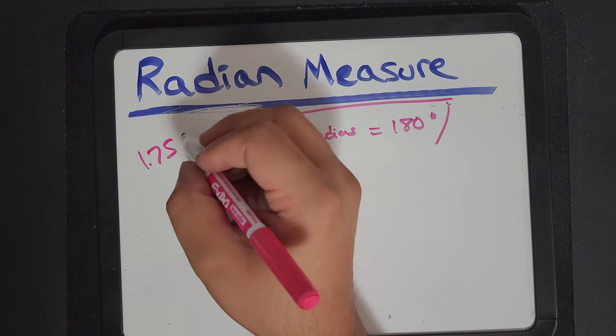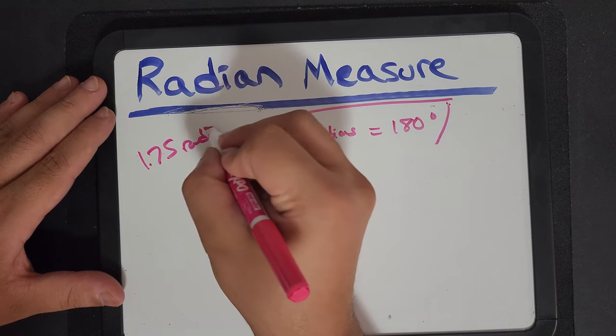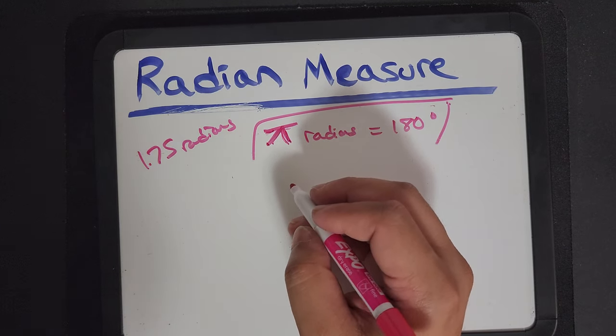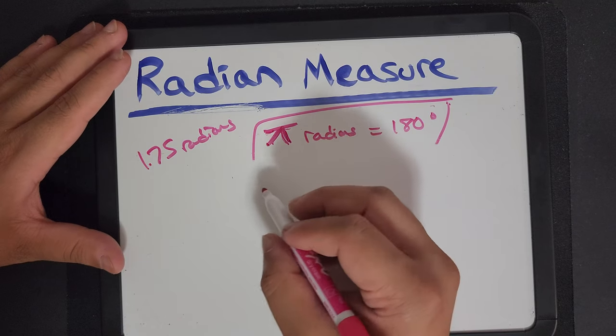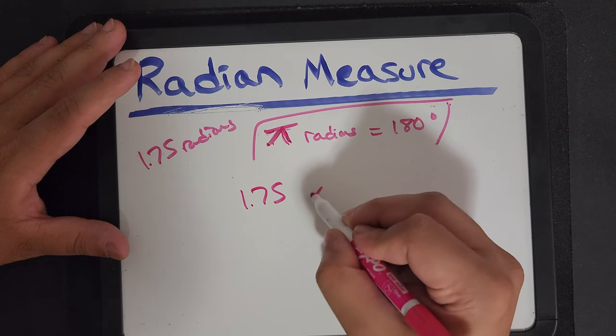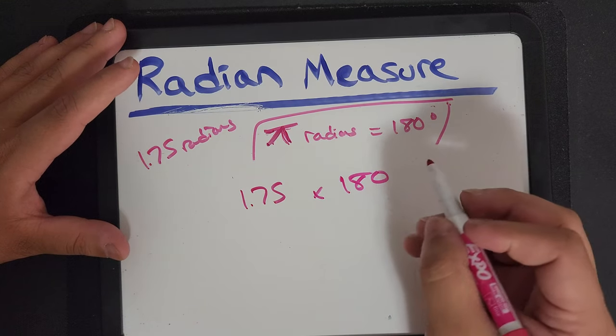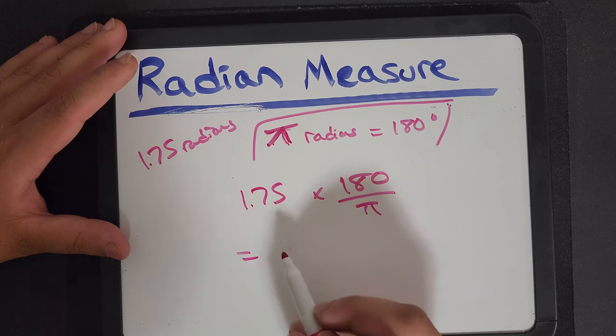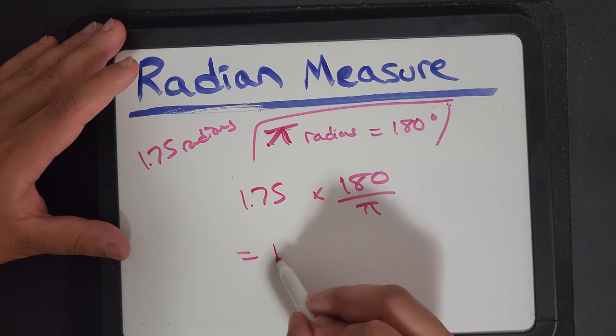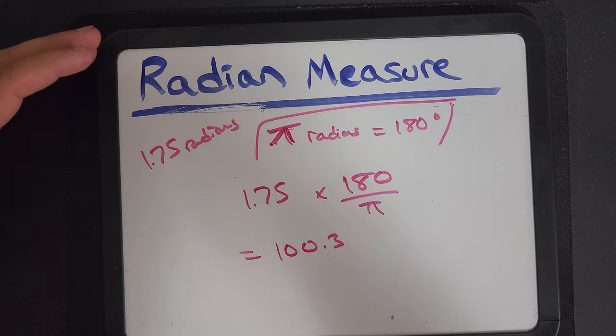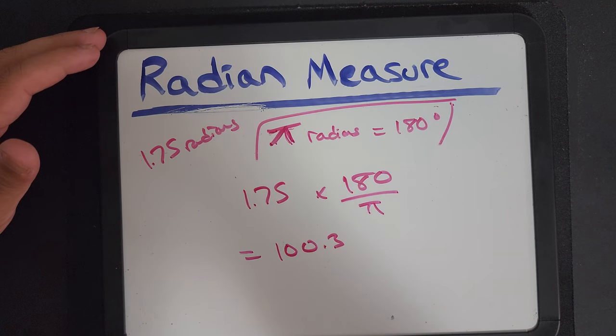1.75 radians. And I'm going to take this 1.75. And I want to turn it into degrees. So I'm going to multiply it by 180 over π. So that should give me 100.3. And there you go. Yup. Looks about right.